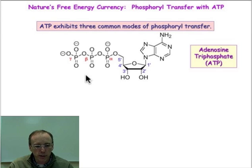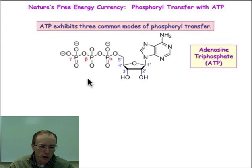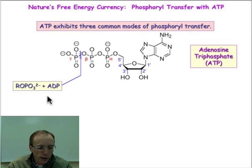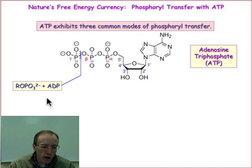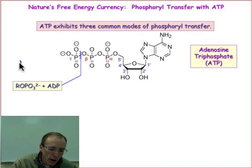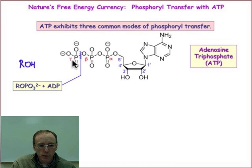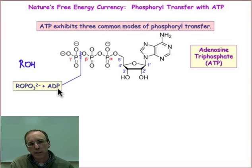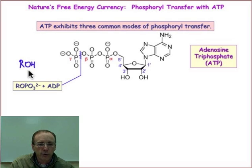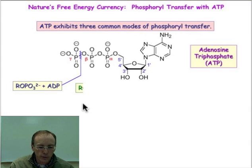Phosphoryl transfer takes place at either of the three phosphorus positions shown here. For example, with an alcohol functional group ROH, it could attack the gamma phosphorus, breaking the indicated bond there, to make ADP — adenosine diphosphate — and a phosphomonoester from the alcohol. That's one phosphoryl transfer reaction.